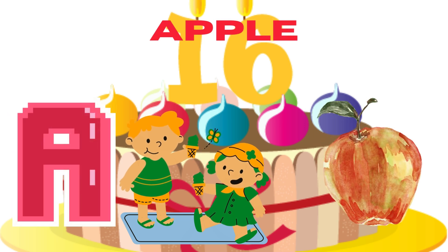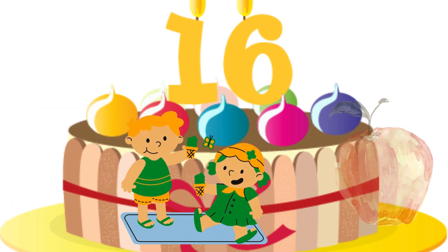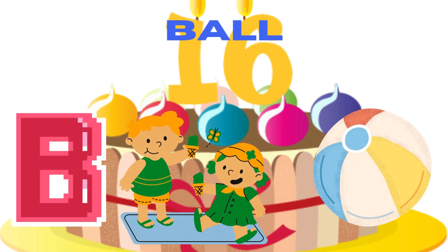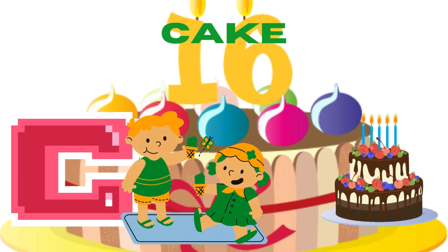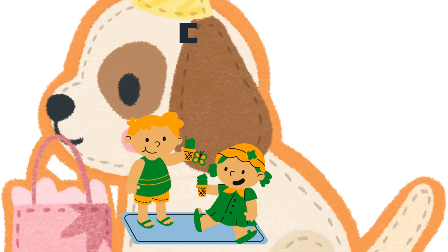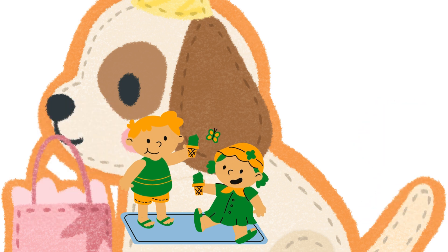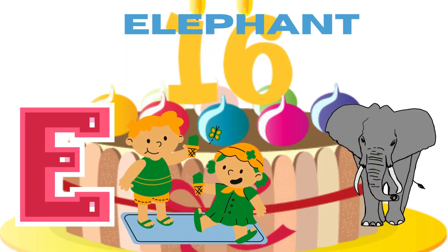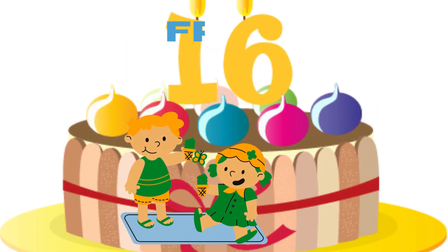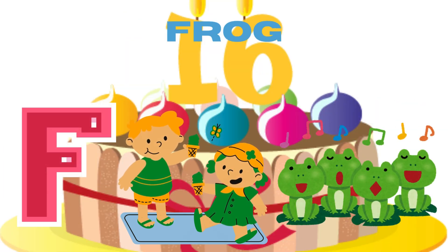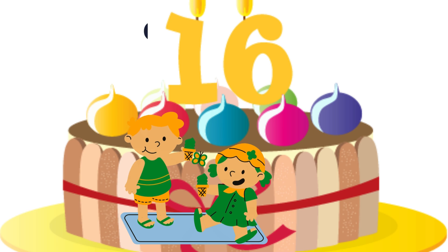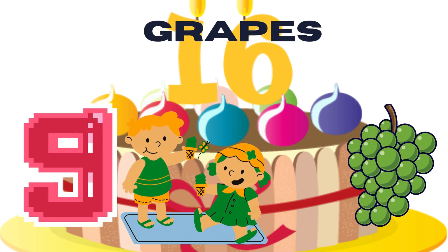E for apple, B for bun, C for cake, B for dog, E for elephant, F for frog, G for grapes.